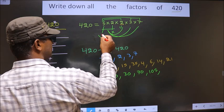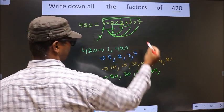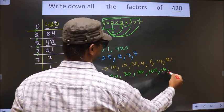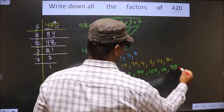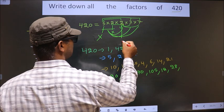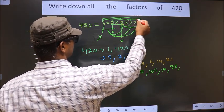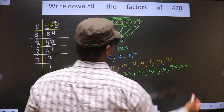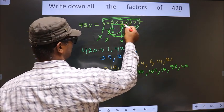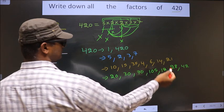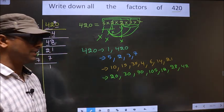Now 5 is done. Take these 2 numbers and combine with 3: 2 times 2 is 4, and 4 times 3 is 12. Now combine with 7: 4 times 7 is 28. Leave one 2, take the other 2: 2 times 3 is 6, and 6 times 7 is 42. The remaining combination of 2 times 3 times 7 also gives 42, which we already have. So no more possible combinations.